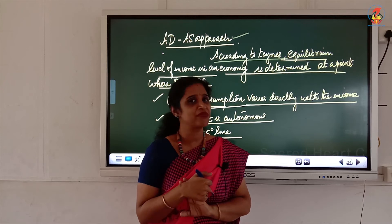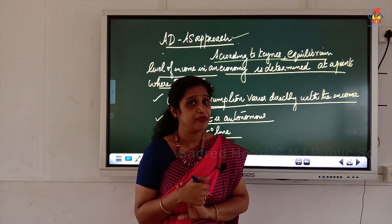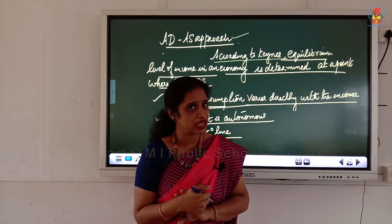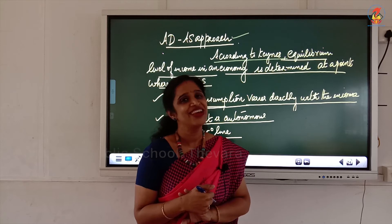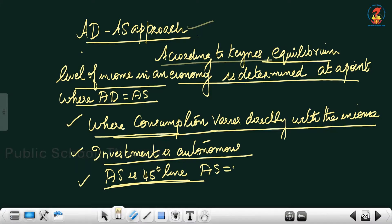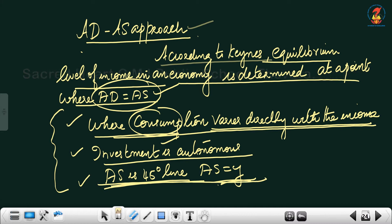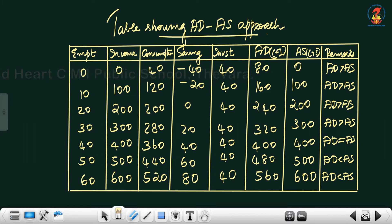Investment is autonomous, and AS is the 45-degree line where AS equals Y. For production, all factors — land, labor, capital, and organization — are used, and their rewards are given as income. Therefore AS equals national income or output. AS is a 45-degree line where AS equals Y.